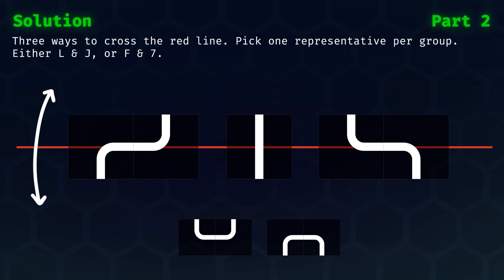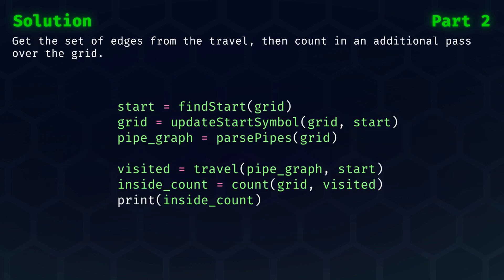See how the pairs would cause us to go up and down over the red line? Let's dive back into the code. Our outline changes slightly to accommodate for the counting. From our travel function, we no longer care about getting the maximum distance, but we want to know which edges, fields, or pipes are part of our loop.